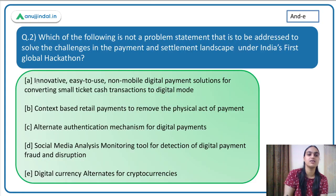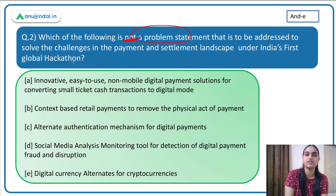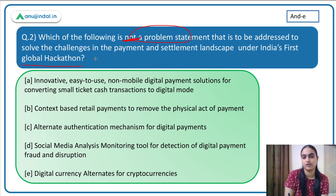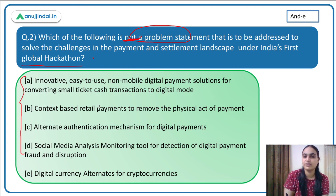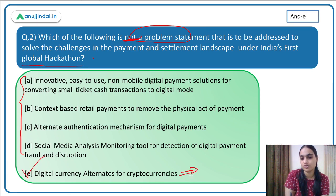The second question asks: which of the following is NOT a problem statement to be addressed under India's first global hackathon organized by RBI? The four problem statements we just discussed are the correct ones. The option that is NOT a problem statement is 'digital currency alternates for cryptocurrency' — no solution related to this was sought. Option E is the answer.